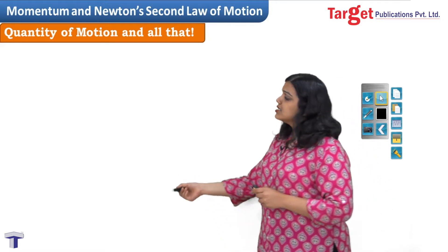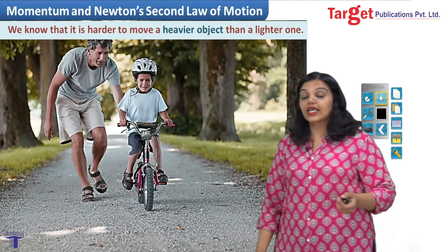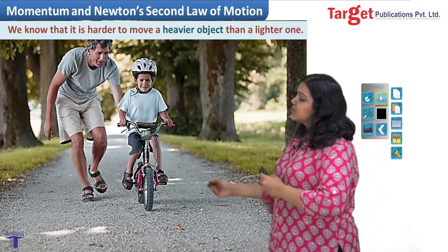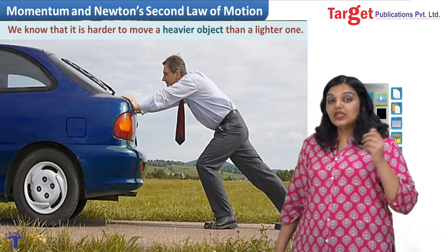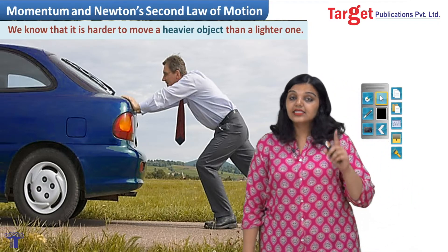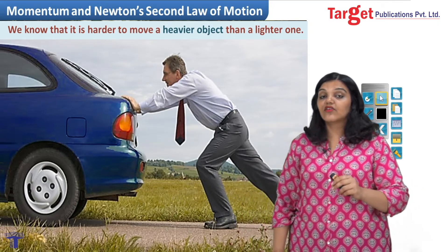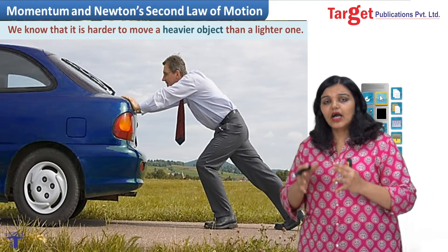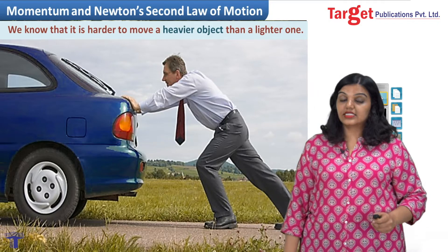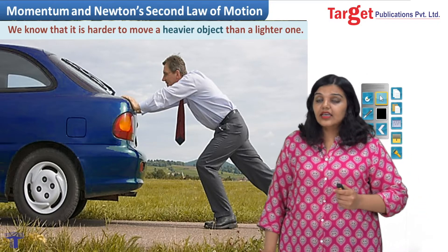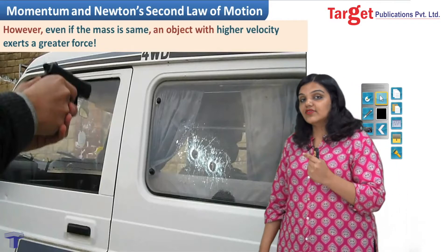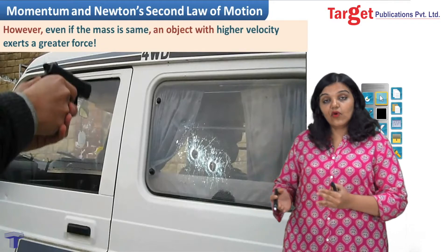We know that it is easier to push a lighter object compared to a heavier one. For example, it is easy to displace a bicycle compared to a car. From this we can make a crude observation and say that the force required must somehow depend on the mass of an object. But even if the object has the same mass, if it has a greater velocity, it exerts a greater force.